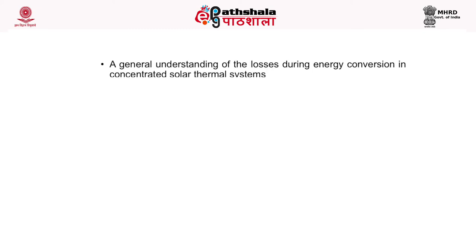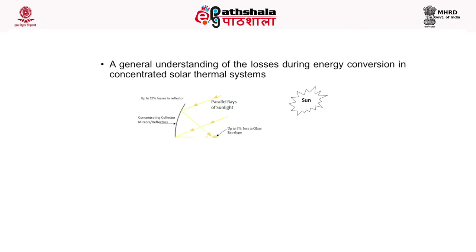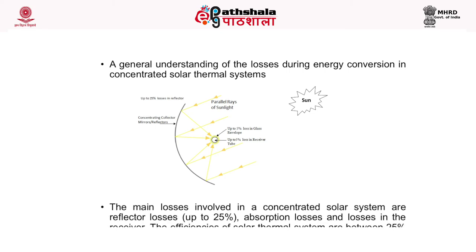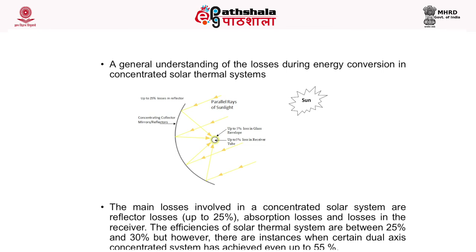This picture shows the losses during energy conversion in a concentrated solar thermal system. The main losses are reflector losses of up to 25%, absorption losses, and losses in the receiver. The efficiencies of solar thermal systems are between 25 and 30%, though certain dual-axis concentrated systems have achieved even up to 55%.